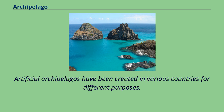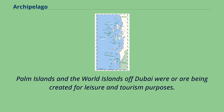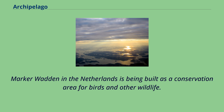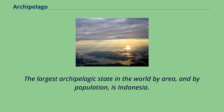Artificial archipelagos have been created in various countries for different purposes. Palm Islands and the World Islands off Dubai were or are being created for leisure and tourism purposes. Marker Waden in the Netherlands is being built as a conservation area for birds and other wildlife. The largest archipelagic state in the world by area and by population is Indonesia.